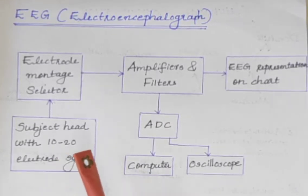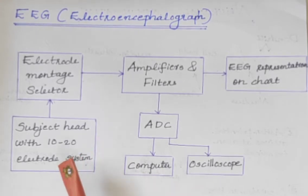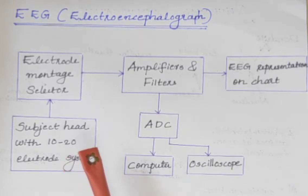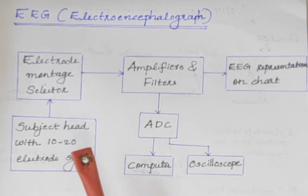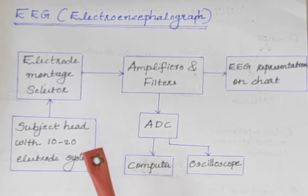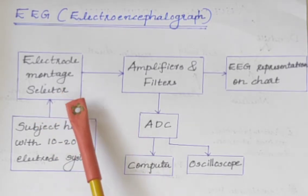In a 25-electrode EEG system, 23 electrodes are active electrodes, one is a ground electrode, and one is a reference electrode. In general, 25 electrodes are used in an EEG test, but the number of electrodes may vary as per the EEG requirement and area of investigation.